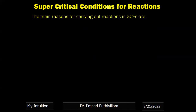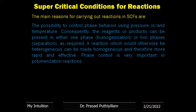The main reason for carrying out reactions in supercritical fluids is the ability to control phase behavior using pressure and temperature. Consequently, reagents or products can be present in either one phase (homogeneous) or two phases (phase separation) as required, giving better control whether to conduct the reaction under homogeneous or heterogeneous conditions. Reactions that would otherwise be heterogeneous can be made homogeneous, making them more rapid and effective — phase control is very important, including in polymerization reactions.